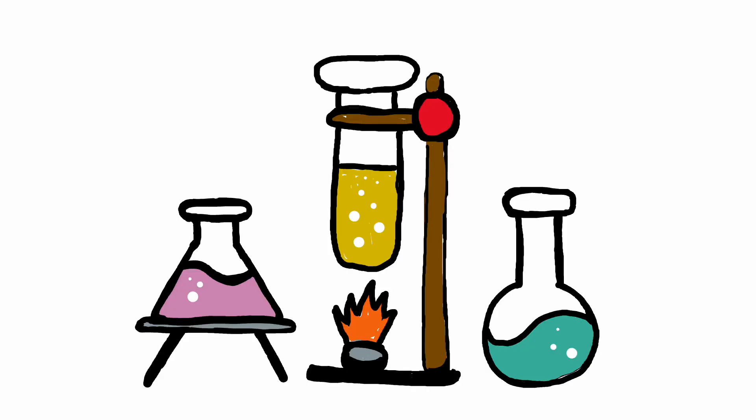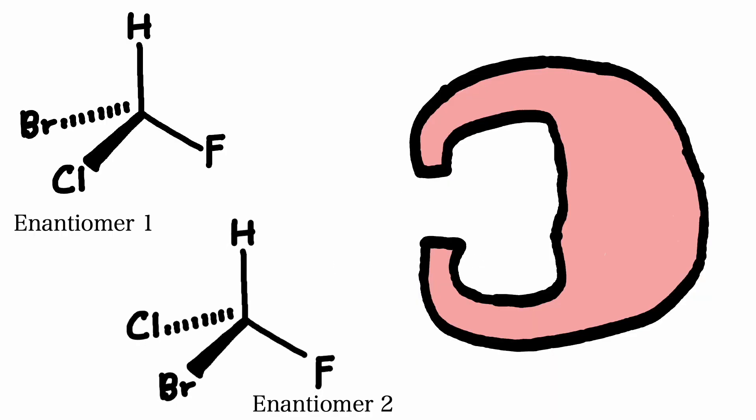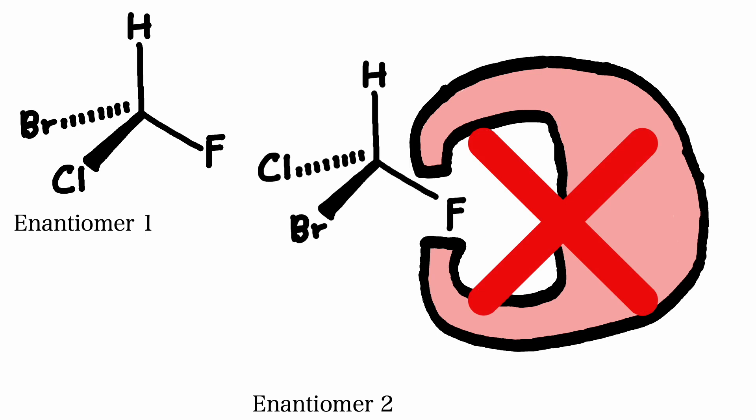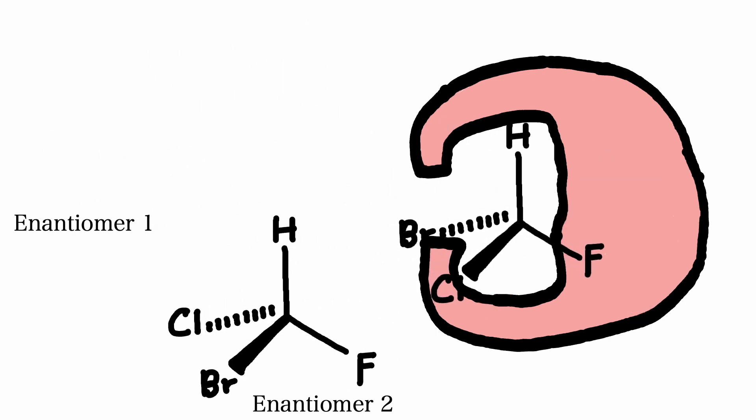The other way to differentiate between enantiomers is through interactions with other molecules. Enantiomers can have different interactions with enzymes, receptors, and other chiral molecules in biological systems. Enzymes are highly specific catalysts and their active sites are often stereospecific. This means that enzymes can distinguish between different stereoisomers including enantiomers.